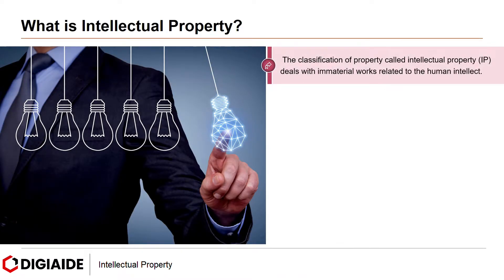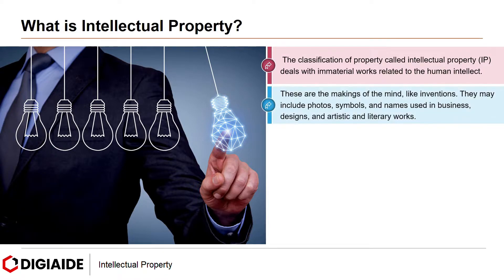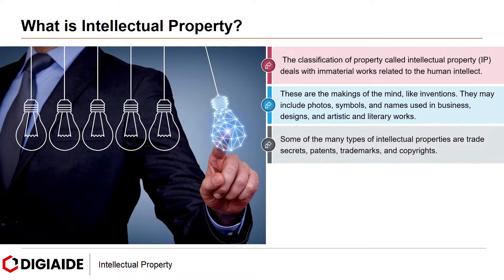The classification of property called Intellectual Property deals with immaterial work related to the human intellect. These are the makings of the mind like inventions. They may include photos, symbols, and names used in business, design, and artistic and literary works. Some of the many types of Intellectual Property are trade secrets, patents, trademarks, and copyrights.